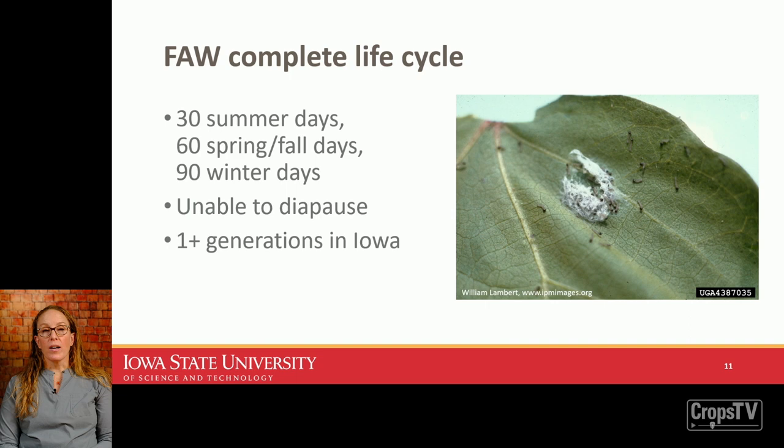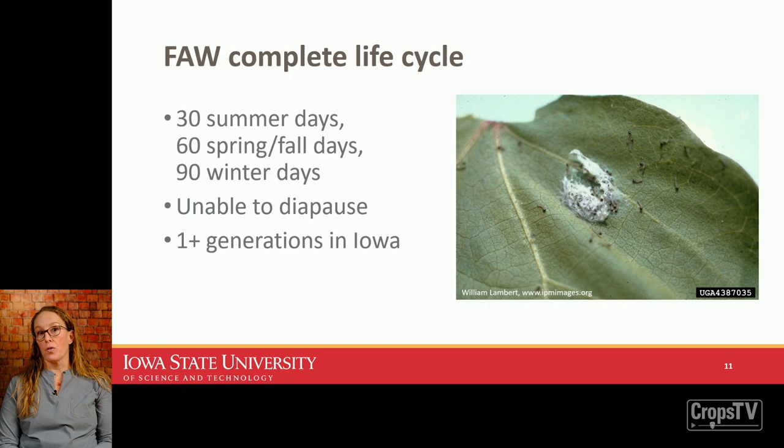Like all caterpillars, fall armyworm goes through a complete life cycle that is entirely temperature driven. In the peak of summer, especially in the southern U.S., they can complete a generation in as little as 30 days. In spring or fall with cooler nights, the generation may take up to 60 days, and where they spend the winter in the southern U.S., up to 90 days.